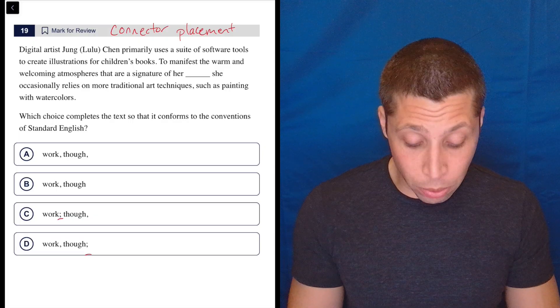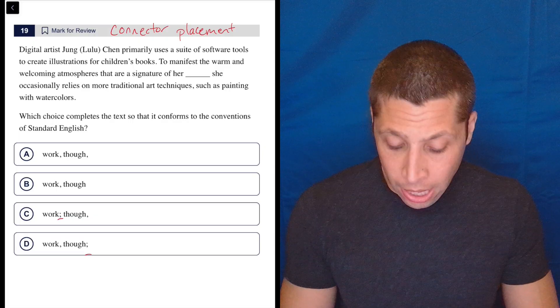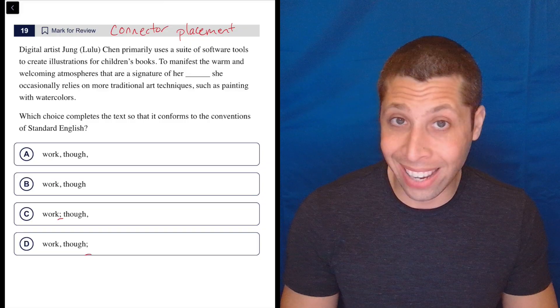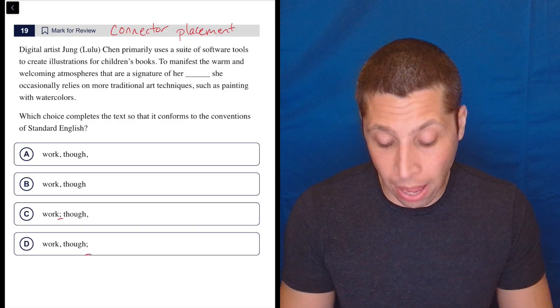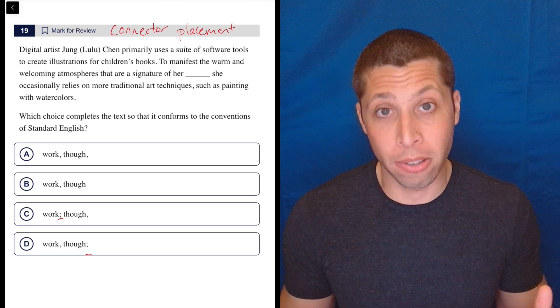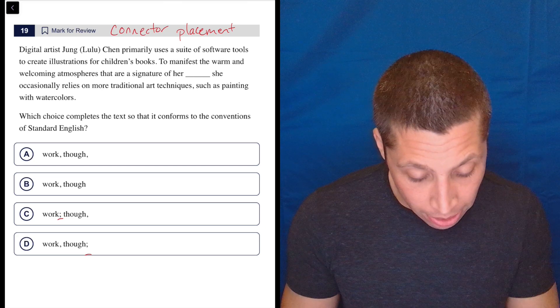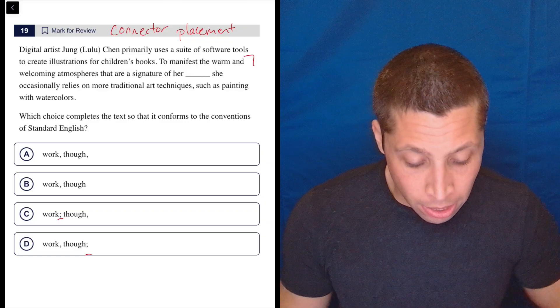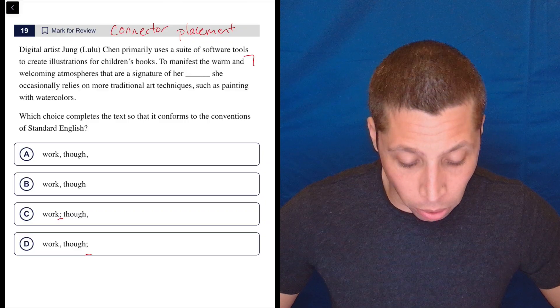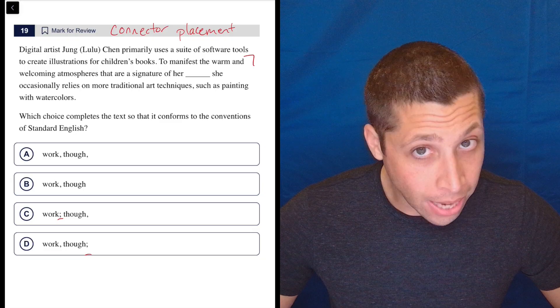But the first thing I would do has nothing to do with the word 'though'—it's purely: do I have sentences here? If I have a sentence before the semicolon and a sentence after, then I need a semicolon. And the word 'though,' no matter where it's placed, is going to be an extra piece, so I don't really care about it. So let's just read. We're going to start here: 'to manifest the warm and welcoming atmospheres that are a signature of her work.' That is not a sentence.